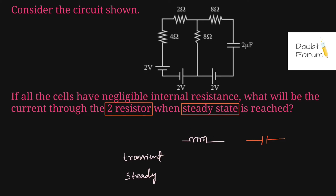An inductor in its transient state would always behave like an open circuit, whereas a capacitor in its transient state — during its transient period — will behave like a closed circuit or short circuit. Opposite to this, an inductor in its steady state would always behave like a short circuit. Similarly, a capacitor in its steady state would always behave like an open circuit. This is the table we have to remember before solving such questions.